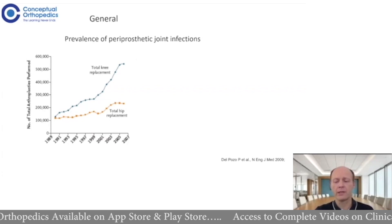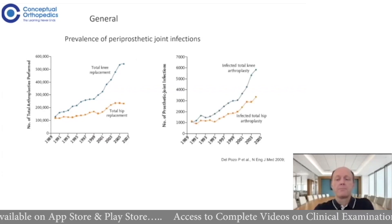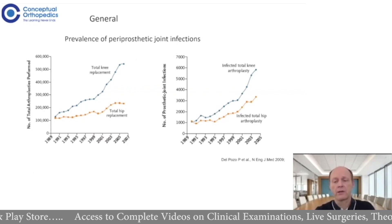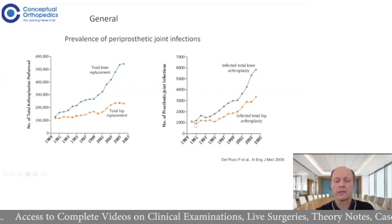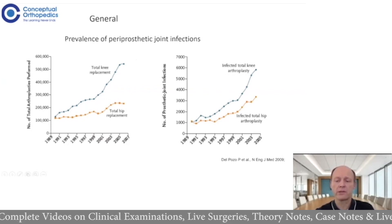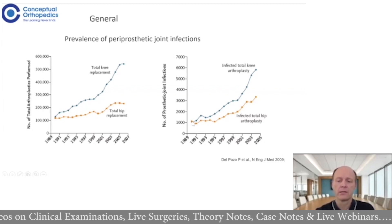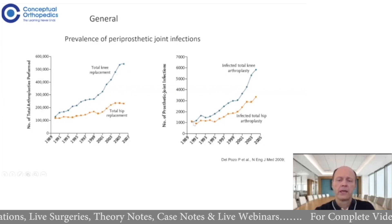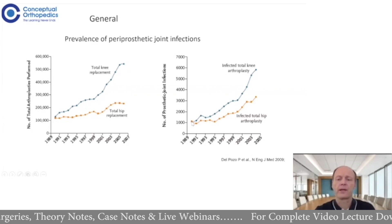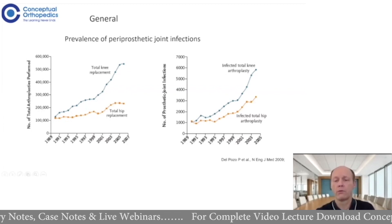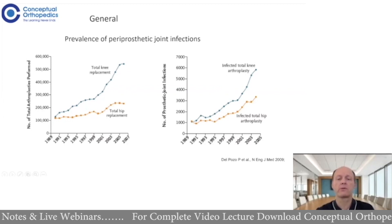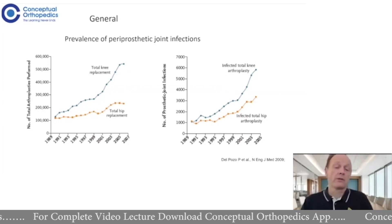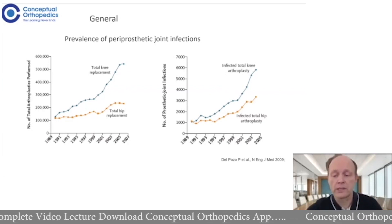The somewhat frustrating number is shown on the right side of that graph. Very simultaneously, and at an even higher percentage, we see an increase in infected total hip arthroplasty — from 1,000 to around 3,000 — and in total knees from 1,000 to more than 6,000. This means the increase is not only due to an expanding market; infection is also increasing percentage-wise.